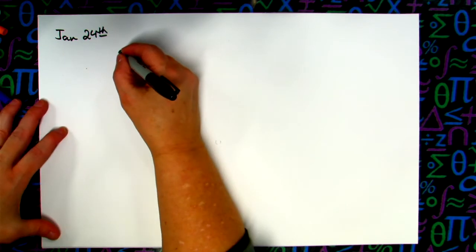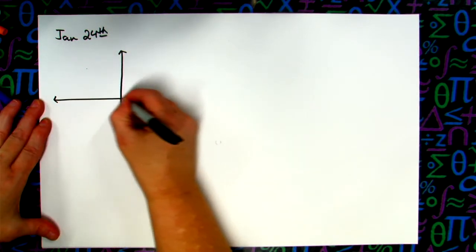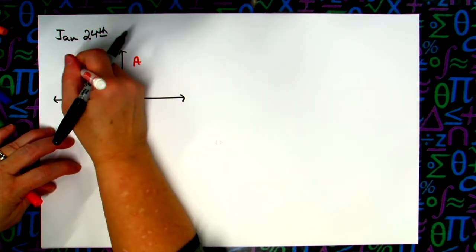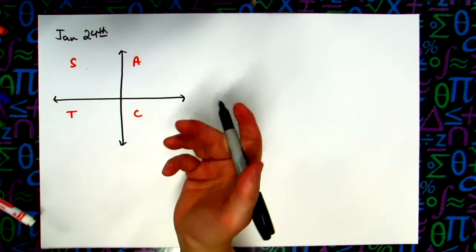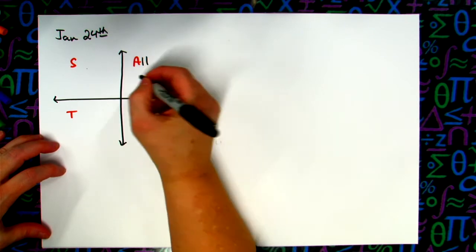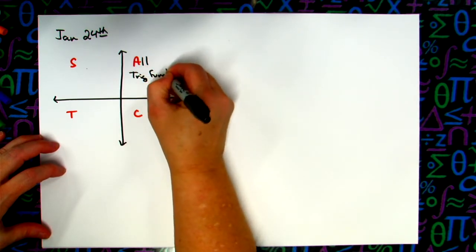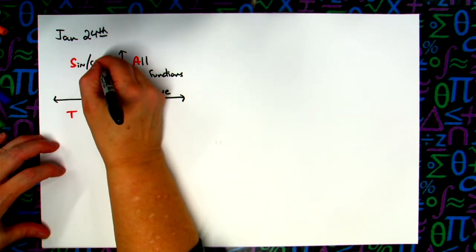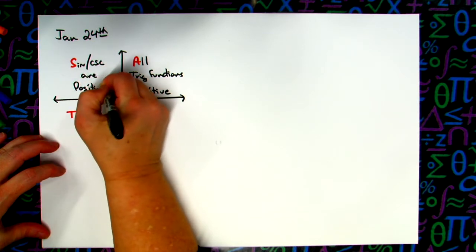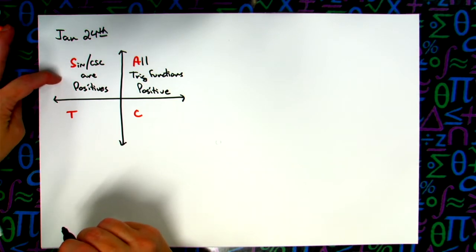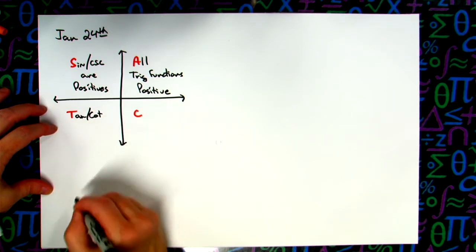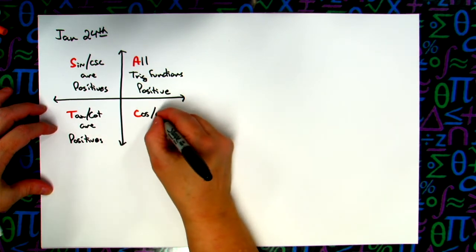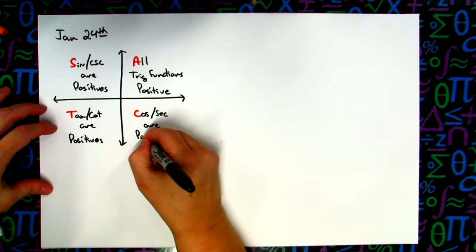The first thing I want to talk about is the trig functions in the various four quadrants. You were given an acronym: All Students Take Calculus. That acronym helps you remember it goes counterclockwise. The A stands for All — all trig functions are positive in the first quadrant. The S stands for Sine and Cosecant — those are the only two positive in the second quadrant. The T stands for Tangent and Cotangent — the only two positive in the third quadrant. The C stands for Cosine and Secant — the only two positive in the fourth quadrant. All others are negative.